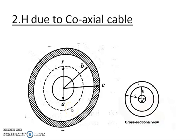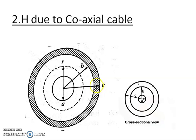We are going to find out the magnetic field intensity H due to a coaxial cable. Consider a coaxial cable as shown in the figure. Its inner conductor is solid with a radius a, carrying a current I. The outer conductor is in the form of a concentric cylinder whose inner radius is B and outer radius is C.